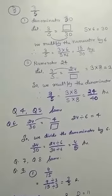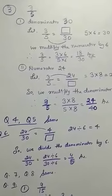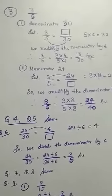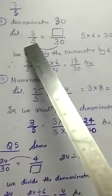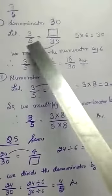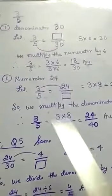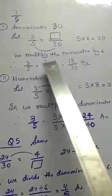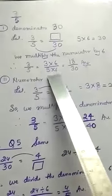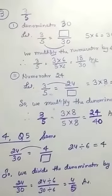Question number 3. Find the equivalent fraction of 3/5 having denominator 30. The denominator is 30. 5 times 6 equals 30, so 3 times 6 equals 18. We multiply the numerator by 6. 3 times 6 and 5 times 6 gives us 18/30. So your answer is 18 for the numerator.